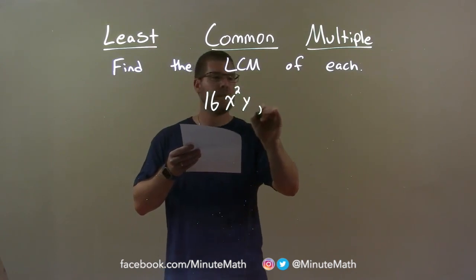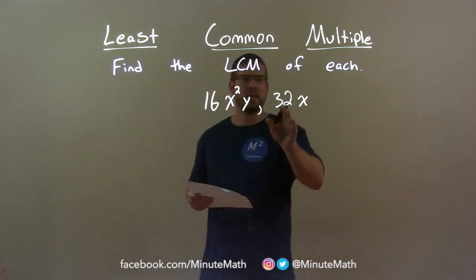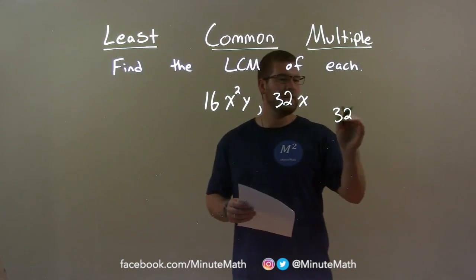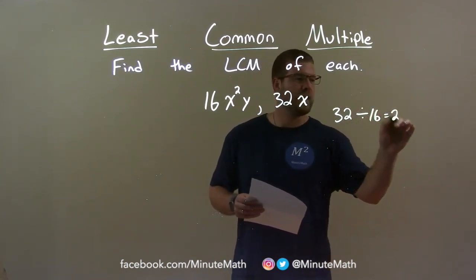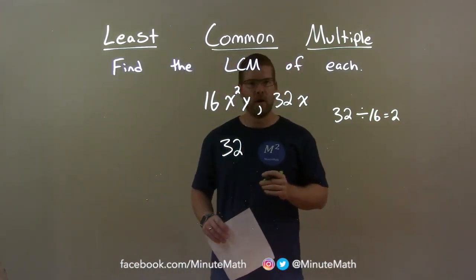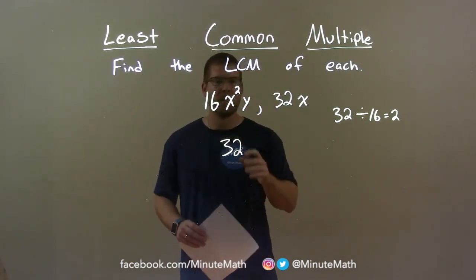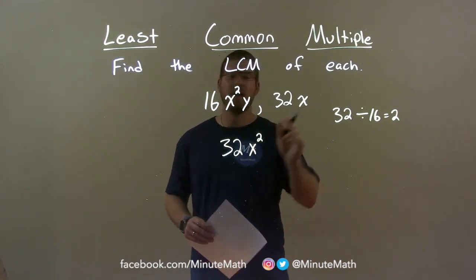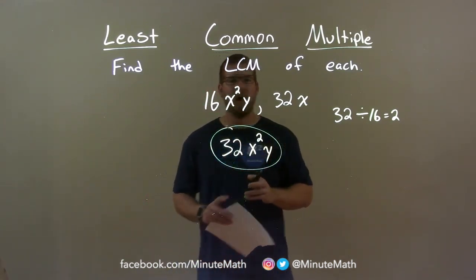16x squared y and 32x. First I deal with my numbers — 32 is the largest of the two. It turns out 32 itself is divisible by 16, two times. So 32 is the number I'm looking for. Now for the variables: I have x squared here and one x there, so x squared comes down. I have one y and no y's, so at least one y comes down. My final answer is 32x squared y.